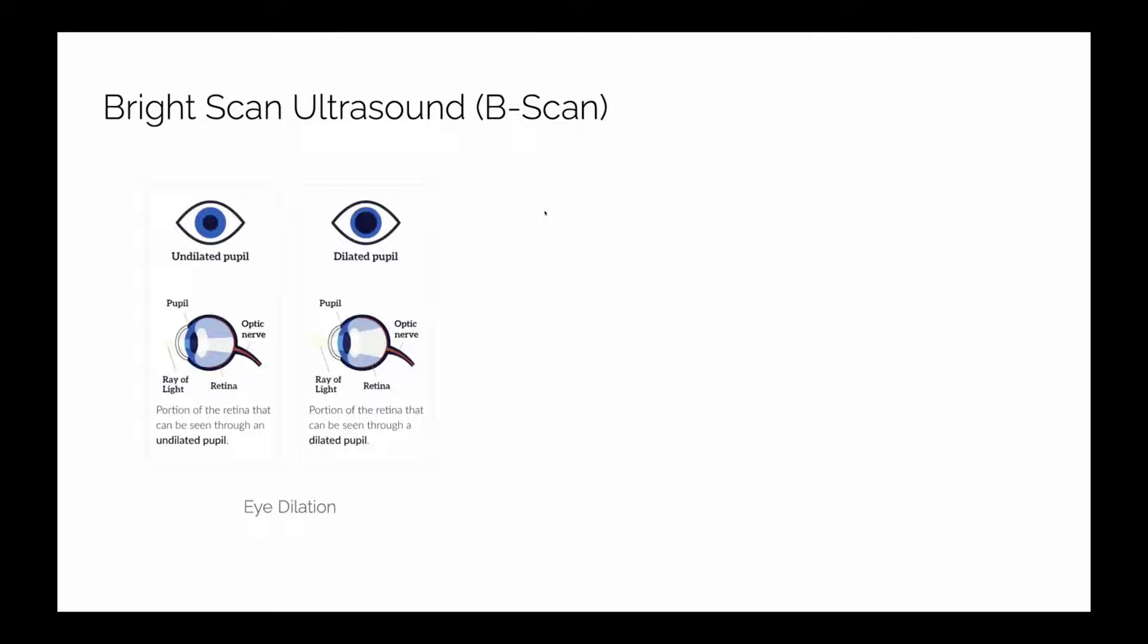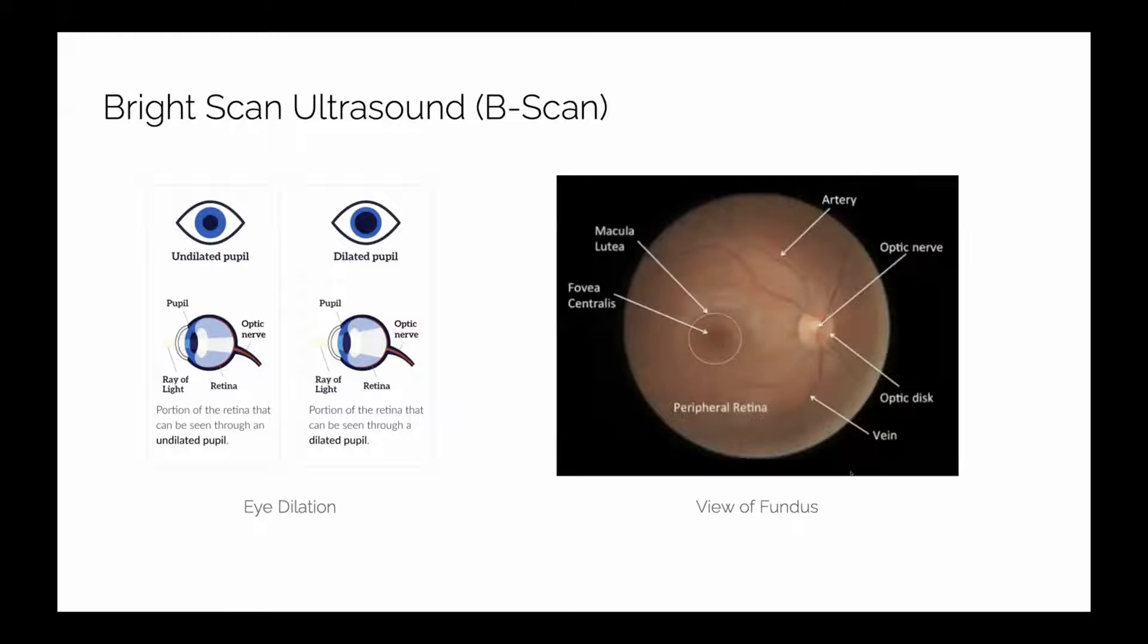So why would an ophthalmologist want to get an ultrasound in a clinical setting? When you go to the ophthalmologist, they'll often do a dilated fundus exam. They'll put some dilating drops in your eyes so they can have a better view of the back of your eye, which is called the fundus. The fundus encompasses everything you can see in the back of the eye: the optic nerve, your vessels, the macula, and your peripheral retina.